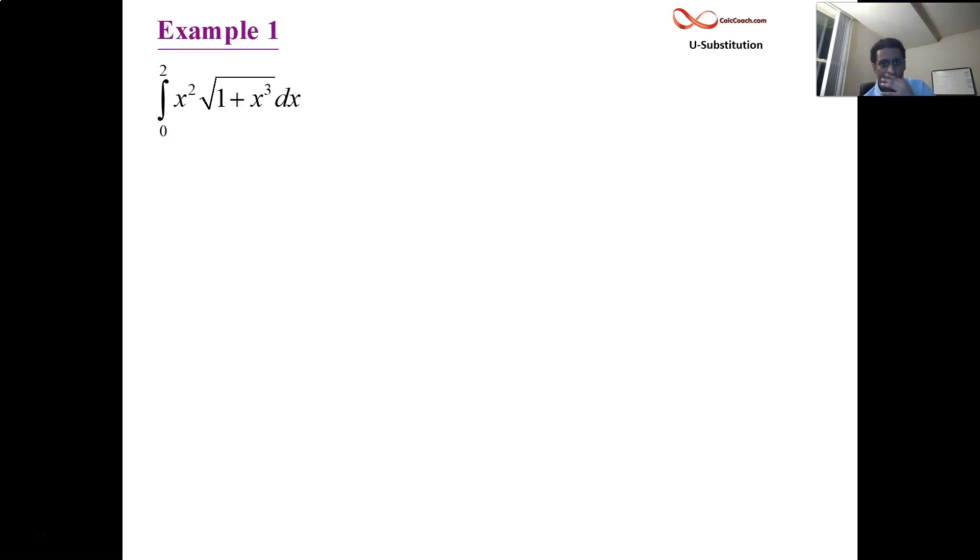In this first example here we have x squared times the square root of 1 plus x cubed and it's our job to be able to find the antiderivative of that. This is a definite integral so we're looking for the area under that curve between x equals 0 and x equals 2.